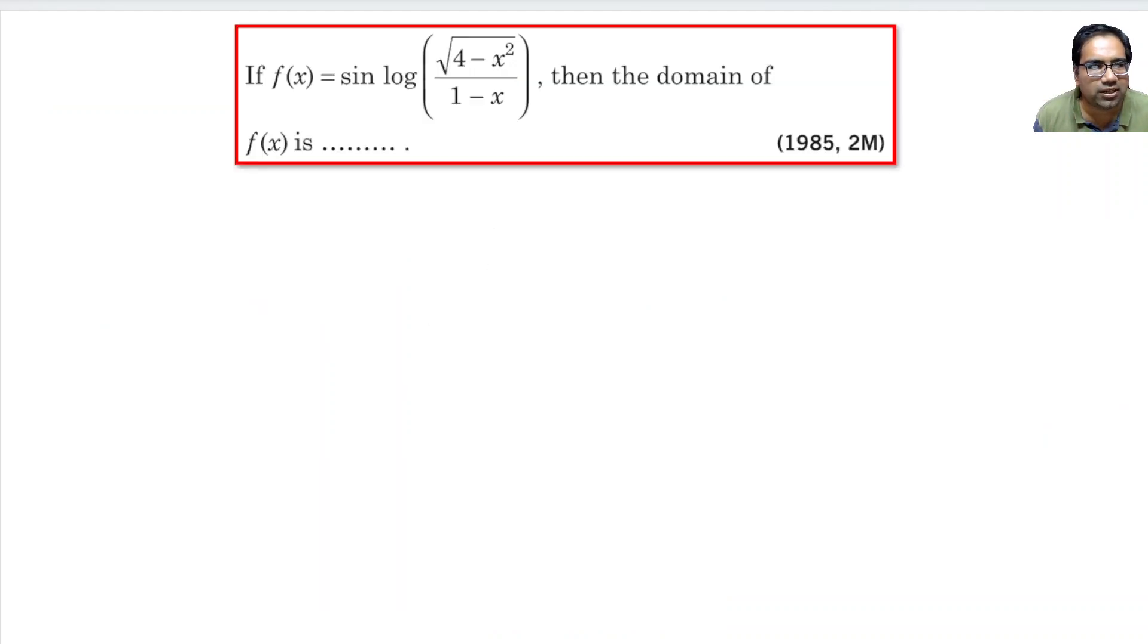Now let us look at this log function. If this has to be positive, √(4-x²)/(1-x) has to be positive. First, obviously the numerator is the square root, so this has to be positive. At the same time, the denominator has to be positive.